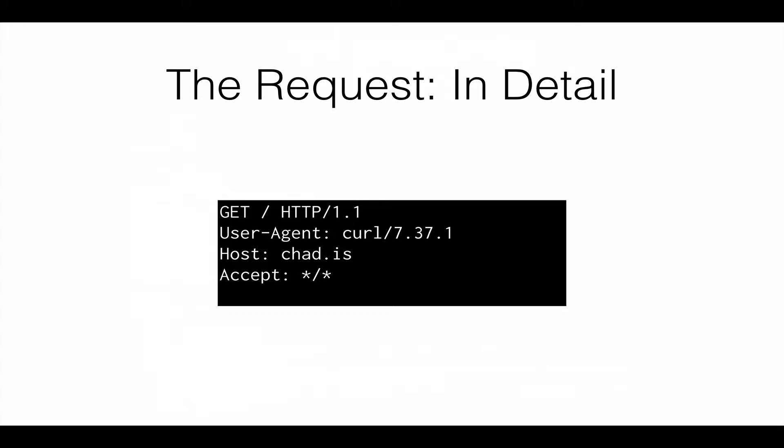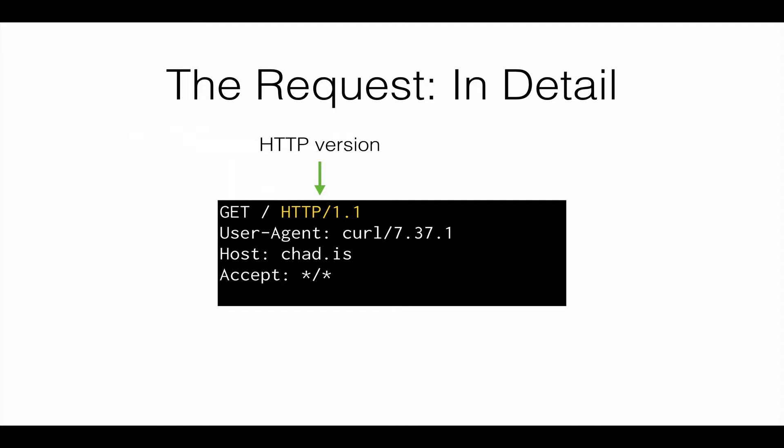Let's look at both the request and response in more detail, starting with the request. It starts off with an HTTP method, which can be GET, PUT, or POST — this particular one uses GET. The next part is the path, also known as the URI, which is the unique identifier to the resource you're trying to retrieve. In this case it's the root path, just a slash. The third thing is the HTTP version, and currently almost everybody uses version 1.1.